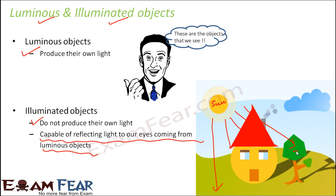Such objects are known as illuminated objects — they cannot produce their own light, but they are still visible because they can reflect the light coming from a luminous object. Reflecting the light means when light falls on them, the light rays bounce back and reach our eye, and that is how we are able to see them. So basically, whatever we see around us, all those objects are either luminous in nature or illuminated in nature.